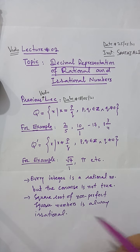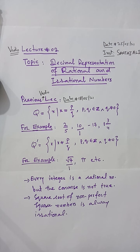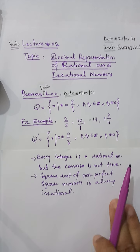Perfect square numbers are: 4 (which is 2²), 16 (which is 4²), 9 (which is 3²), 25 (which is 5²), 36 (which is 6²), 49 (which is 7²), 81, and 144 — these are all perfect squares. These are all points we discussed in the previous video lecture.